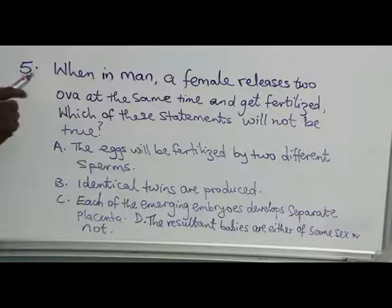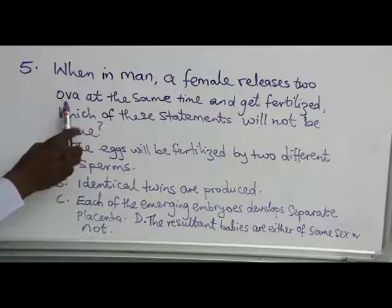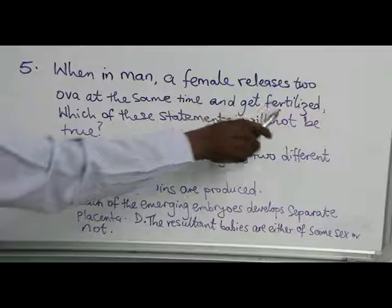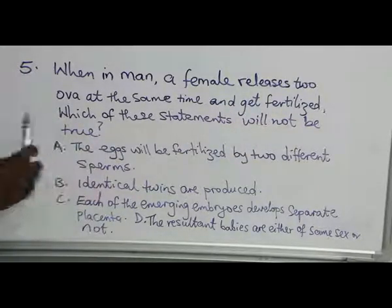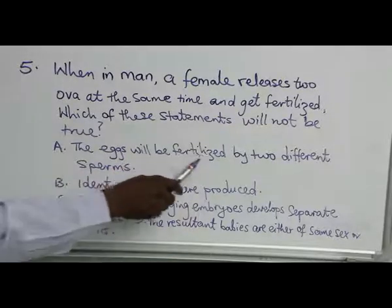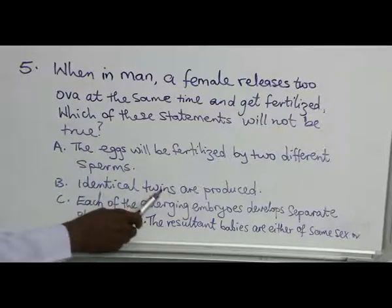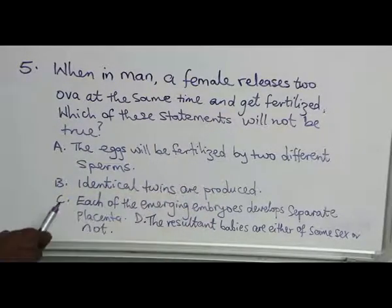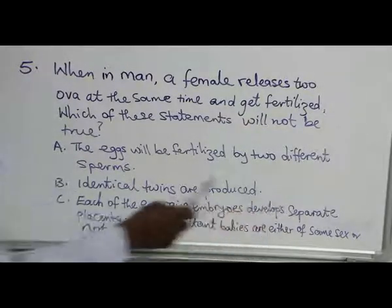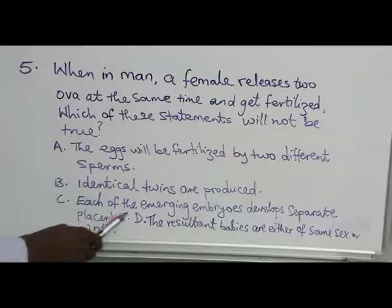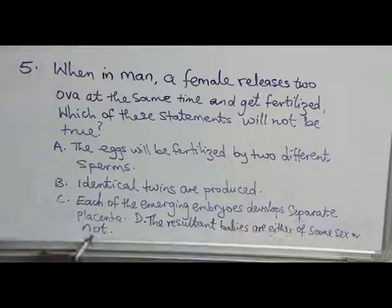Question 5: When a female releases two eggs at the same time and both get fertilized, which of these statements will not be true? A: The eggs will be fertilized by two different sperms. B: Identical twins are produced. C: Each of the emerging embryos develops a separate placenta. D: The resultant babies are either of the same sex or not.